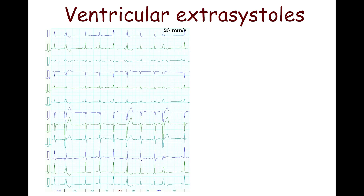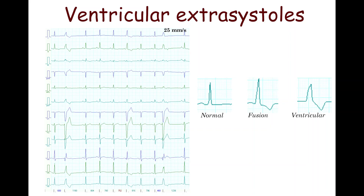Also, the ventricular extrasystole after the P-wave may result in a fusion complex. If a QRS complex is caused by impulses of both supraventricular and ventricular origin simultaneously, such a QRS complex is called a fusion beat. Some parts of the ventricles are depolarized by the impulse of supraventricular origin and other parts by the impulse originating from the ventricular tissue. Fusion beats are manifested by an intermediate QRS complex morphology, usually wider than normal QRS complexes but narrower than a true ventricular extrasystole. The degree of fusion may be variable.